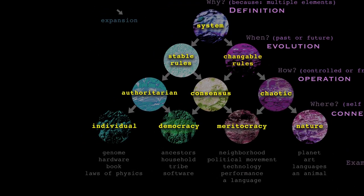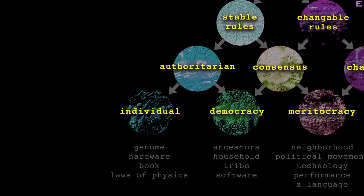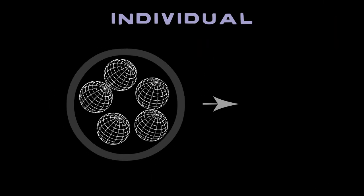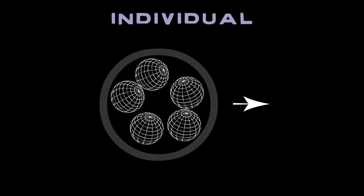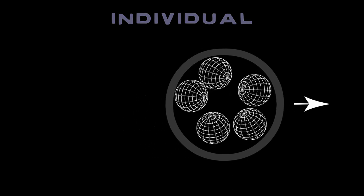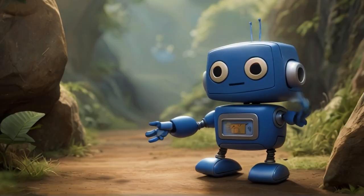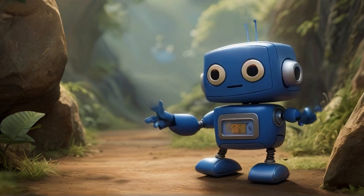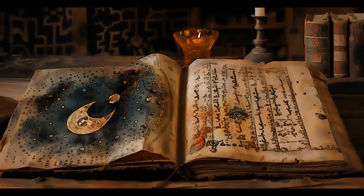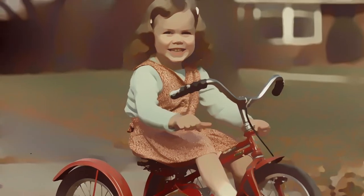Individual, physical connection. A single object, defined by some notable boundary, functions as a unique process based on its own structure and history, prioritising its own needs. Examples include a genome, book, or tricycle.